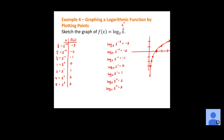Some properties of this graph: the x-intercept is at (1, 0). For any basic logarithmic function that's always going to be the case, because any base to the 0 power equals 1. We also have a vertical asymptote at x equals 0 — along the y-axis. No matter what the base is, our basic logarithmic function graph will always have an x-intercept at (1, 0), a vertical asymptote at x equals 0, and that basic shape. The base just changes how fast or slow it grows going out to the right.